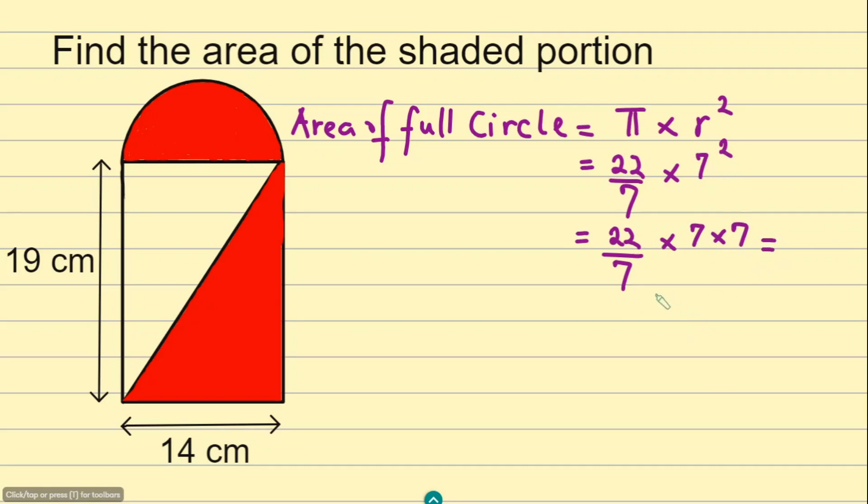If you try to solve this, you can see that 7 here will cancel out the 7, leaving 7 and 22. If you multiply these two numbers, you get 154 centimeters squared.